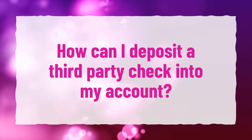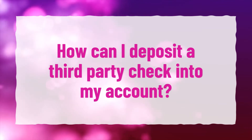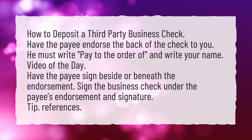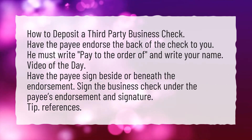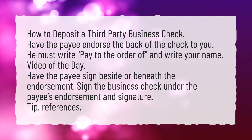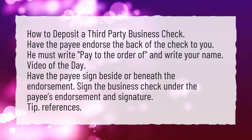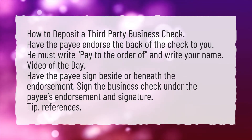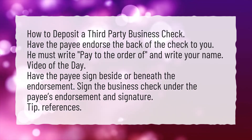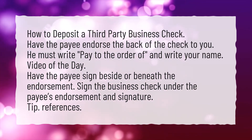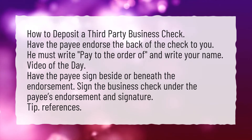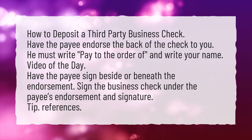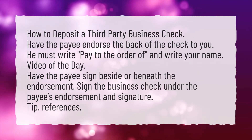How can I deposit a third-party check into my account? How to deposit a third-party business check: Have the payee endorse the back of the check to you — he must write 'pay to the order of' and write your name. Have the payee sign beside or beneath the endorsement. Then sign the business check under the payee's endorsement and signature.